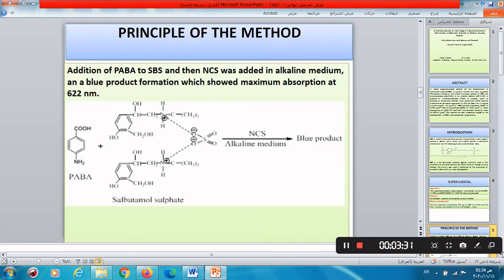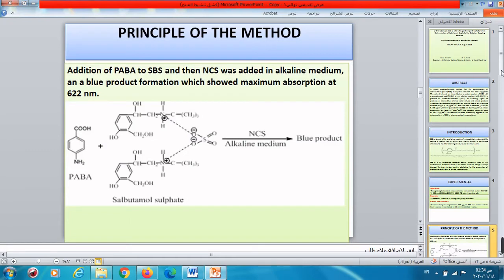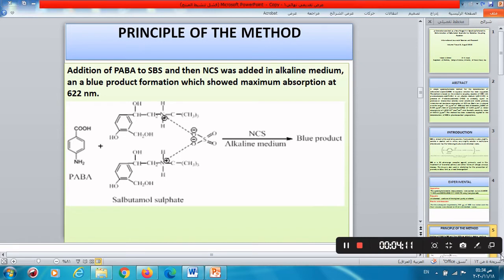Principle of the method. Addition of para-aminobenzoic acid to salbutamol sulfate and then N-chlorosuccinimide was added in alkaline medium by using sodium hydroxide. This is our reaction with N-chlorosuccinimide in presence of alkaline medium, blue color product was produced.